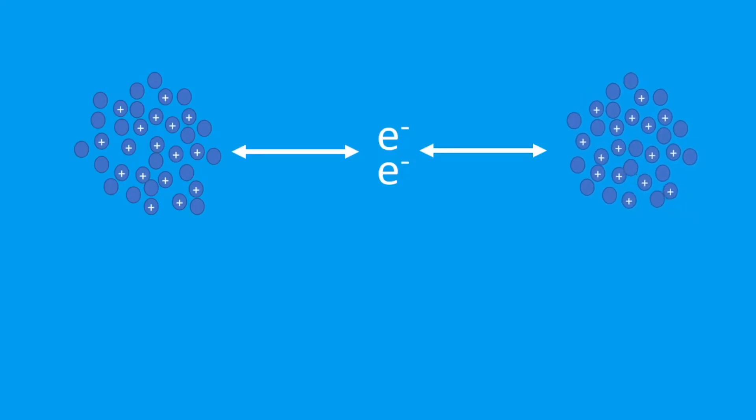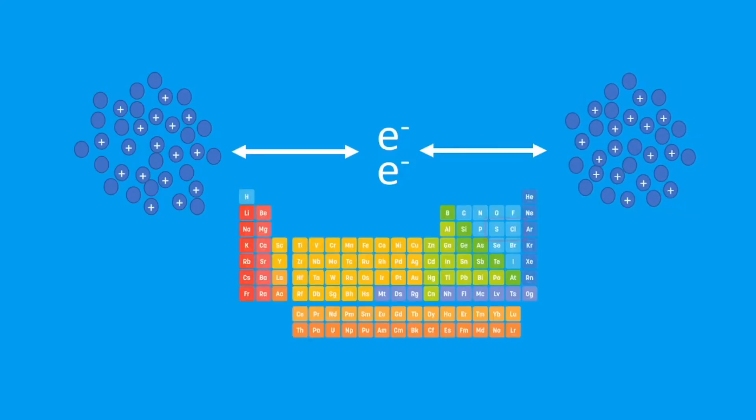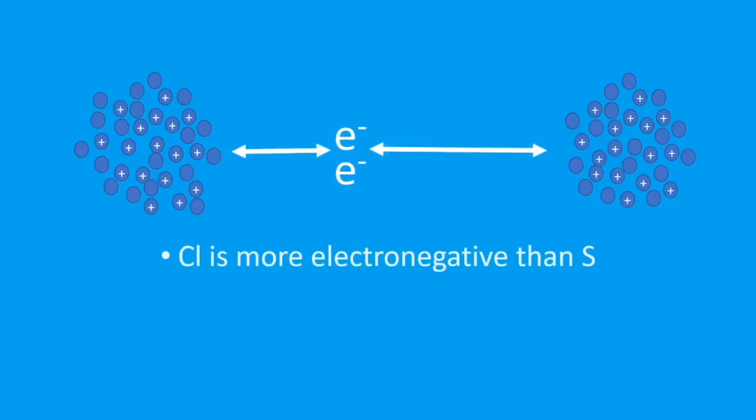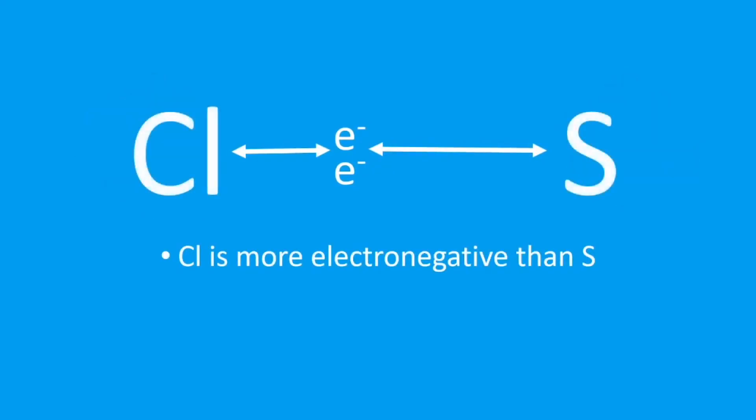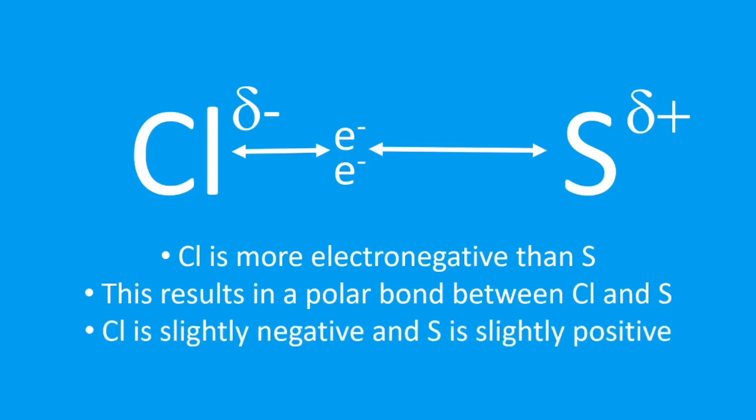Let's look then at chlorine and sulfur this time. Chlorine is more electronegative than sulfur because it's to the right of it in the periodic table, so those electrons are pulled closer to the chlorine because it's more electronegative. This results in a polar bond, and this time it's the chlorine that's delta negative - that means slightly negative - that symbol delta is slightly, and the sulfur is slightly positive.